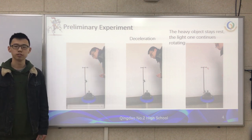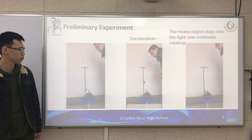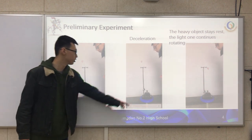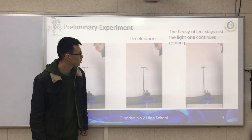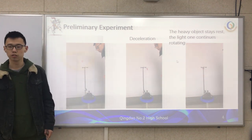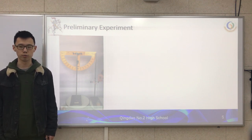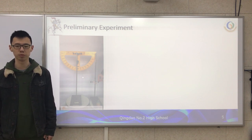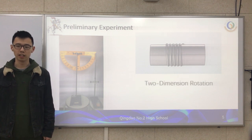This is a video of our preliminary experiment. We can see that the motion has two parts. The first part is a deceleration. The second part is the heavy object stays stationary, and the light one continues rotating. This motion is a two-dimensional rotation. If we try to control the light object and the heavy object in the same plane, we get this kind of failure — the light object will hit the heavy object. So the rotation is two-dimensional.